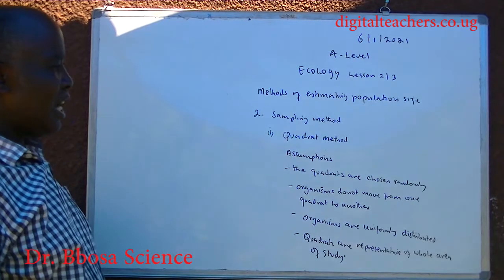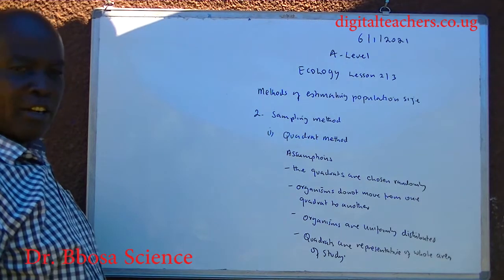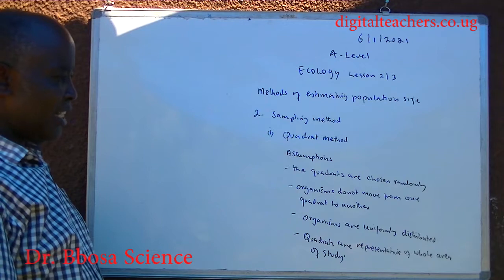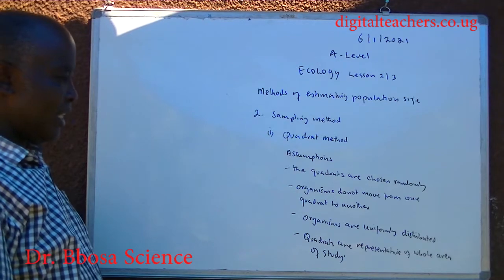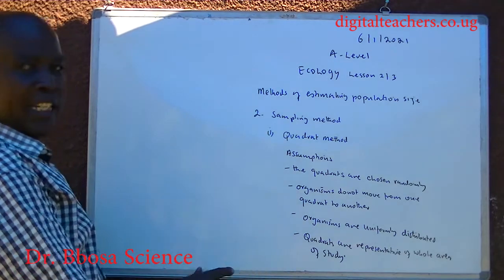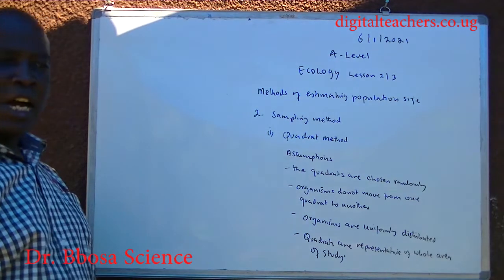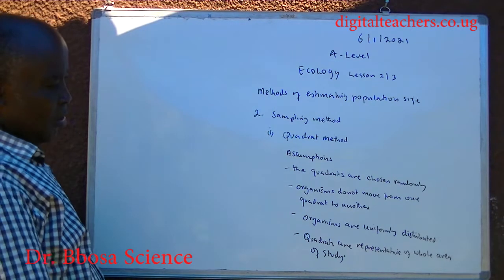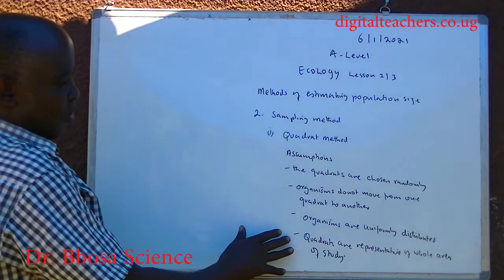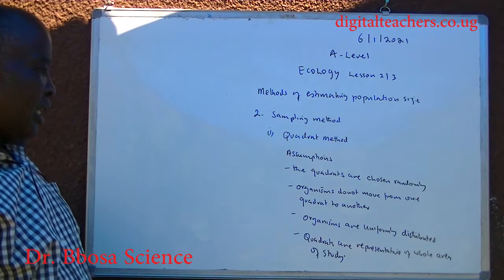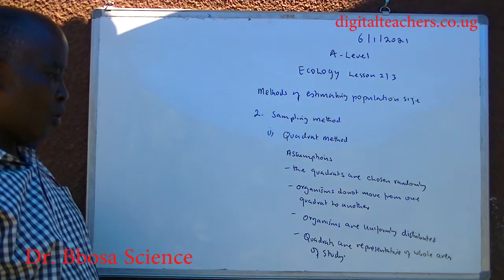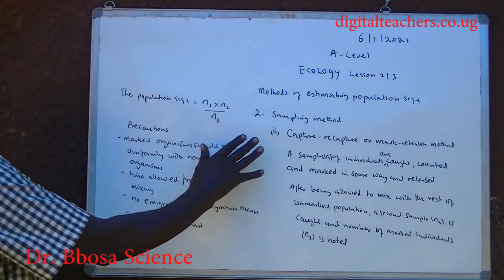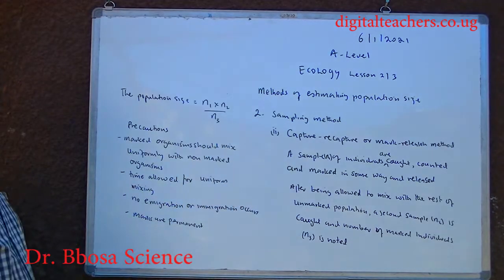Assumptions of the quadrat method: quadrats are chosen randomly, organisms don't move from one quadrant to another, organisms are uniformly distributed, and quadrats are representative of the whole area of study.